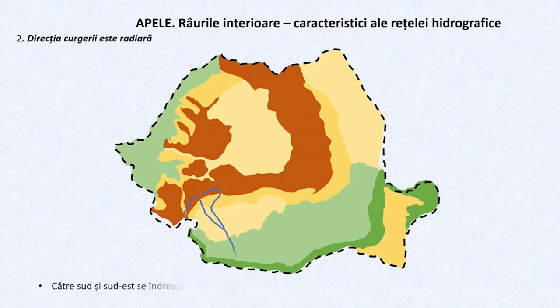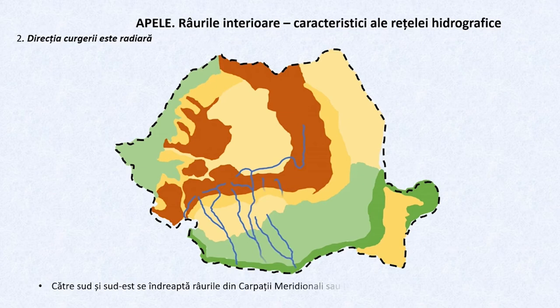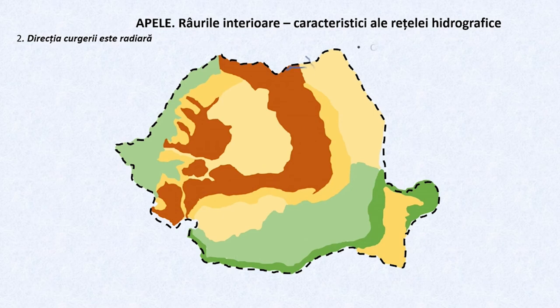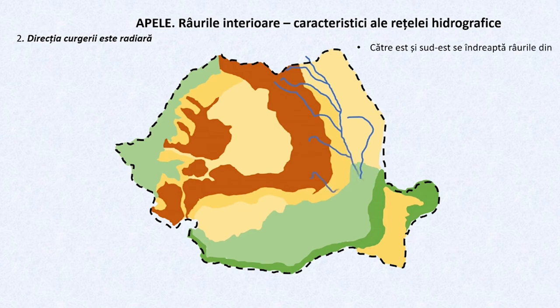Către sudul și sud-estul țării noastre se îndreaptă râurile ce pleacă din Carpații Meridionali, sau ceva mai puțin numeroase din Carpații Orientali. O ultimă grupă este cea a râurilor care își au izvoarele pe latura de est a Carpaților Orientali sau din Podișul Moldovei, ale căror cursuri se îndreaptă către estul și sud-estul țării noastre.